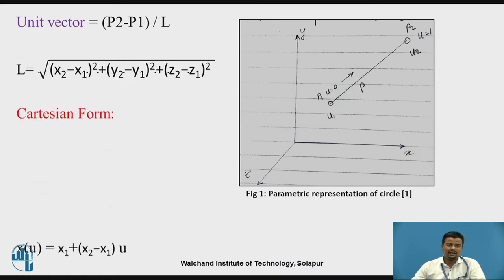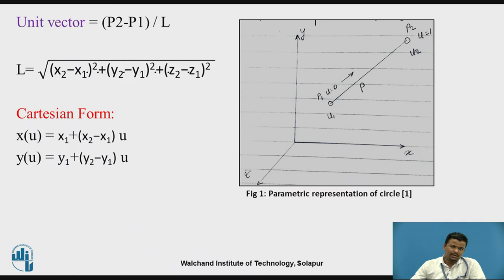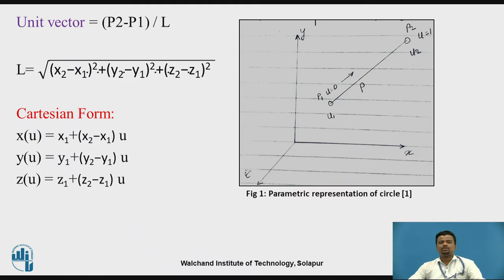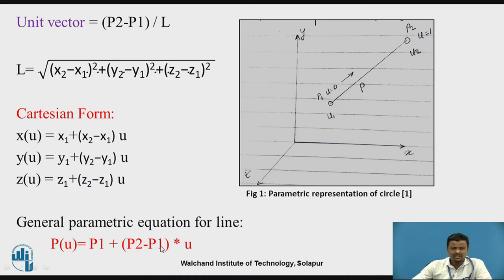In Cartesian form, the equations are: x(u) = x1 + (x2 minus x1)·u, y(u) = y1 + (y2 minus y1)·u, and z(u) = z1 + (z2 minus z1)·u. In general form, we write p(u) = p1 + (p2 minus p1)·u, where p1 and p2 are the position vectors and u is the parameter.